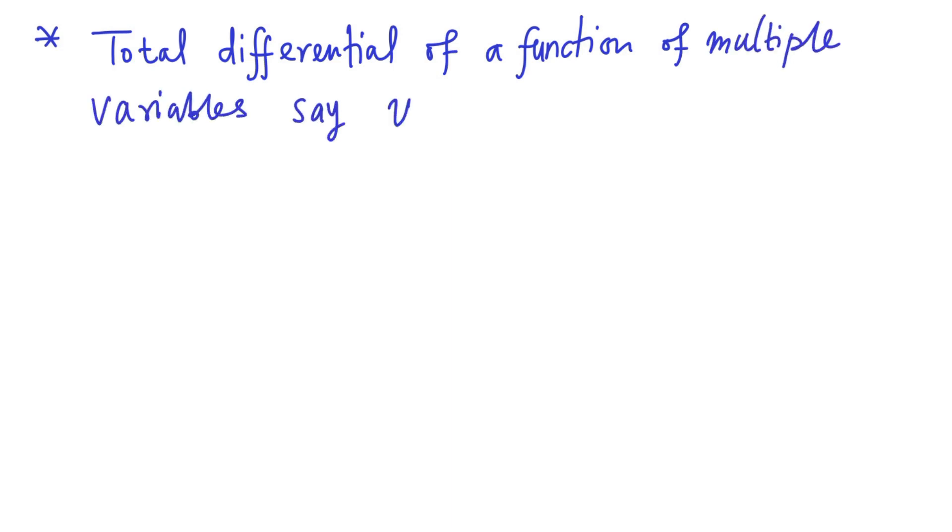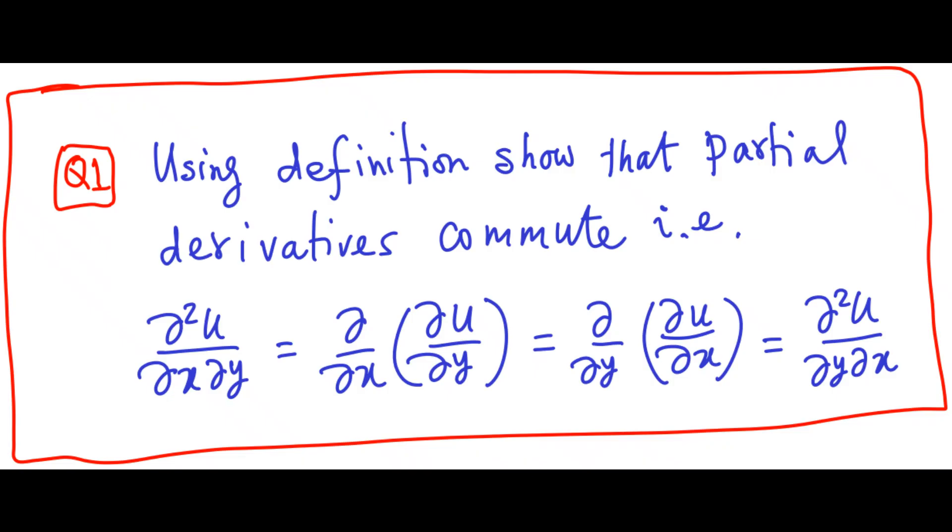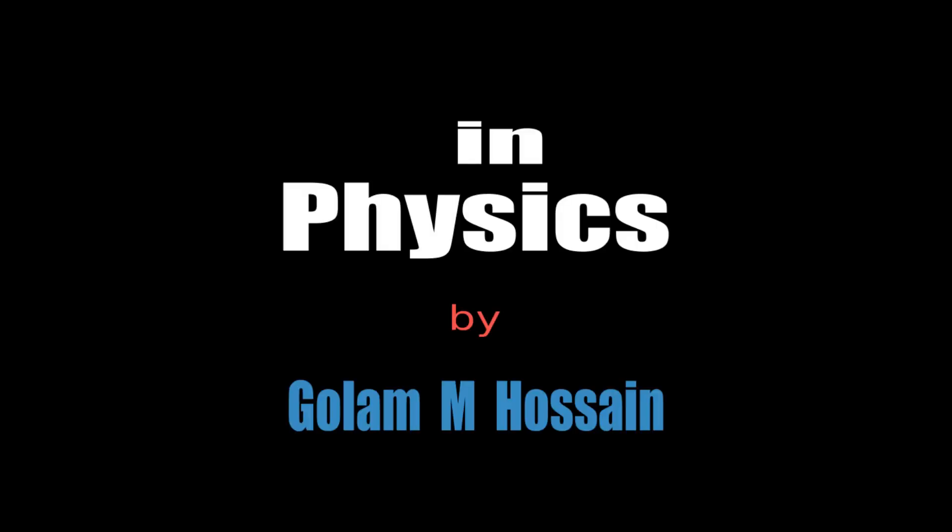We can define total differential of a function of multiple variables. Say you have a function u which is a function of two variables, say x and y. So total differential can be expressed in terms of the partial derivative of the given function.